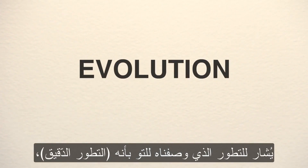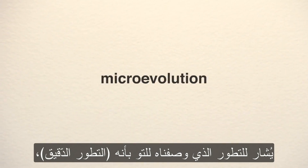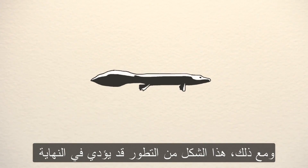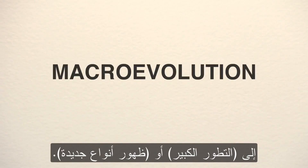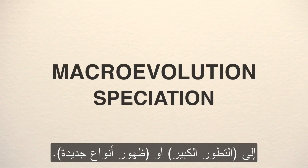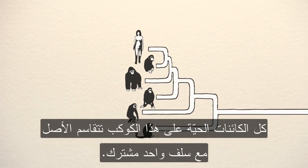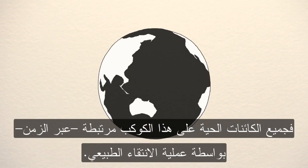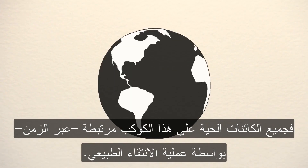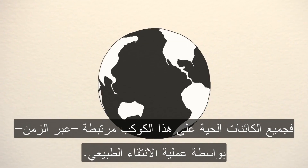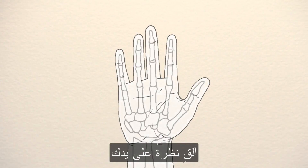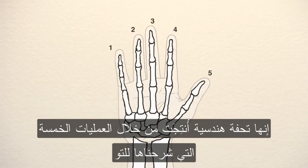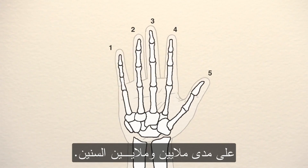The evolution that we have described is referred to as microevolution because it refers to a small change. However, this form of evolution may eventually lead to macroevolution or speciation. Every organism on the planet shares ancestry with a single common ancestor. All living organisms on the planet are connected back in time through the process of evolution. Take a look at your own hand — it's an engineering masterpiece that was created by the five processes I just described over millions and millions of years.